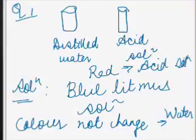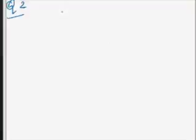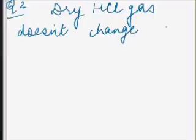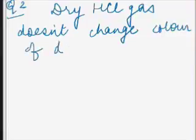By adding blue litmus solution, we can differentiate between the two solutions in the test tubes. Now, coming to question number two: Why does dry HCl gas not change the color of dry blue litmus paper?